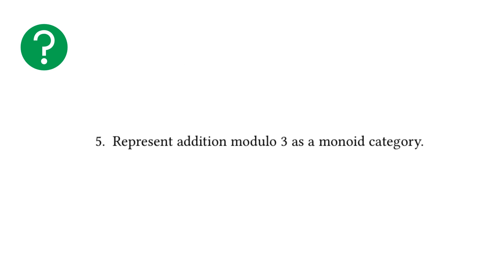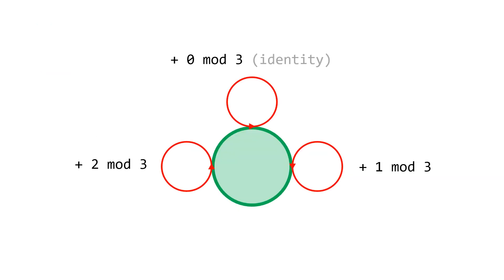And moving on to our final exercise number five, represent addition modulo three as a monoid category. So we are going to do this using our object and arrow diagrams as we've seen up until this point. And this one's pretty straightforward. We have three arrows, plus zero mod three is going to be our identity. And then we have plus one mod three and plus two mod three and any other number that is lower or greater than zero, two, or one is going to end up giving you effectively one of the arrows that is on our diagram currently.